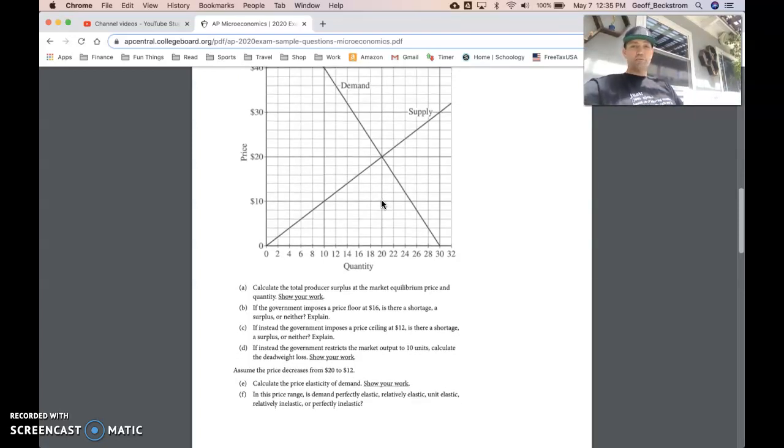For part C, if instead the government imposes a price ceiling at $12, that'll be an effective price control. So here's $12 at a price ceiling. The quantity that producers are willing and able to supply is 12 units, whereas at $12, consumers are willing and able to purchase, or are demanding, 24 units. So in that case we'll have a shortage, and the shortage difference is 12 units.